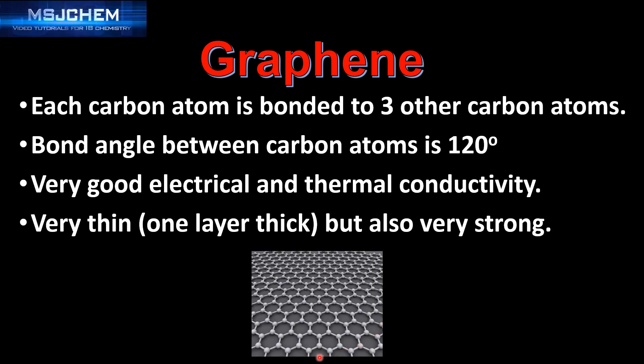Here's an example of some graphene. As you can see, each carbon is bonded to three other carbon atoms, and it's only one layer thick.